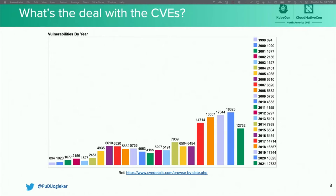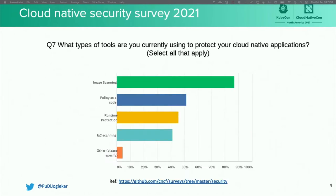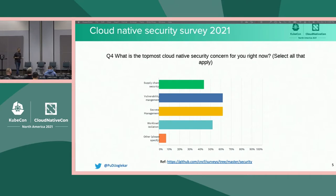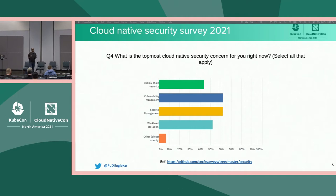We asked CNCF end users as part of TAG Security work: what do you do to secure your Kubernetes and container environments? They responded that they do image scanning. That seems to indicate they're managing vulnerabilities really well. But when we asked another question, they said managing vulnerabilities is one of their topmost concerns. That kind of doesn't make sense — if you're doing image scanning, the obvious conclusion would be that you're doing well with managing vulnerabilities. So the question again is: what's really going on?